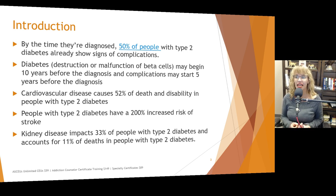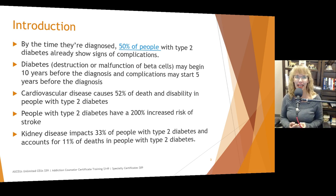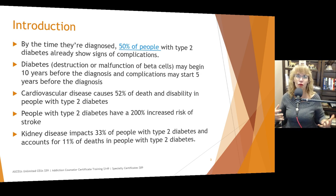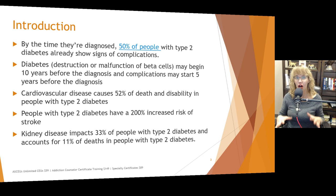Cardiovascular disease causes 52% of death and disability in people with type 2 diabetes. People with type 2 diabetes have a 200% increased risk of stroke, and we know that stroke can contribute to the development of depression as well as dementia. Kidney disease impacts 33% of people with type 2 diabetes and accounts for 11% of deaths. When kidneys can't filter toxins, it contributes to systemic inflammation, which often leads to mood disorders. When the body system starts to break down, it can cause mood and behavioral health symptoms.